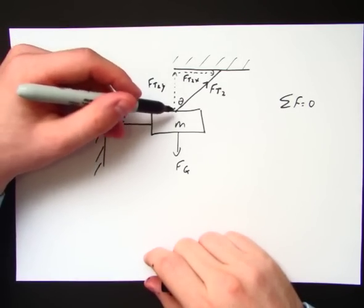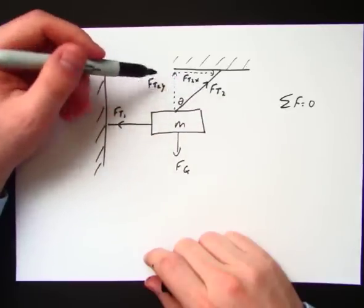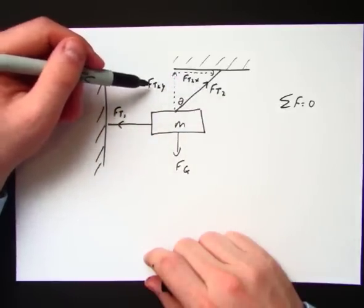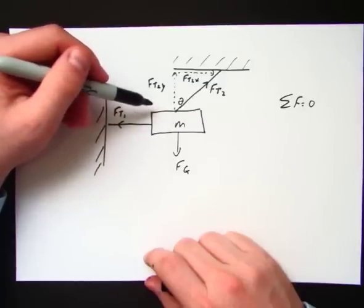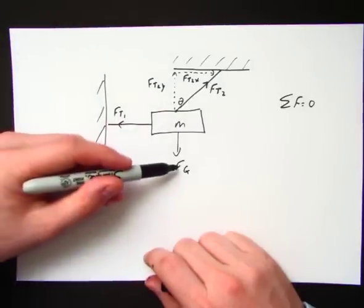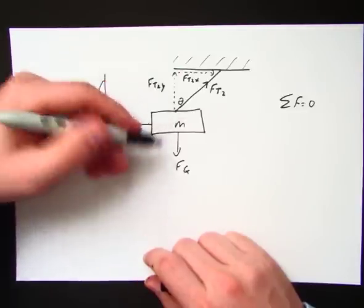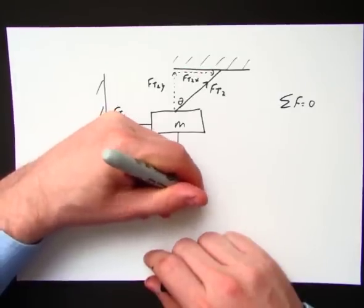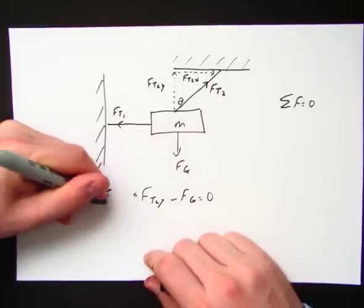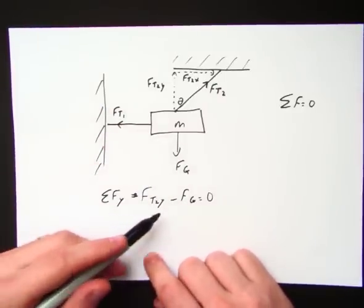Well, we should notice here, and we could use trig to solve for these if we knew the force of tension, but notice here that FT2Y has to be equal in magnitude to which one? Well, it has to be equal in magnitude to force of gravity. These are the only two forces pulling up and down, only vertical forces. So in fact, FT2Y minus FG would equal zero because the net force in the Y is equal to zero. So you end up getting something like this.